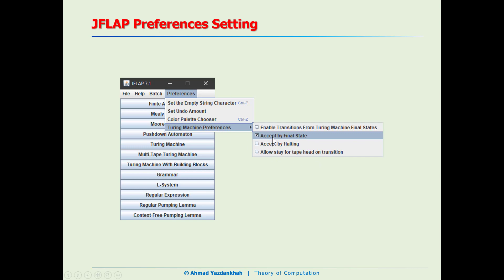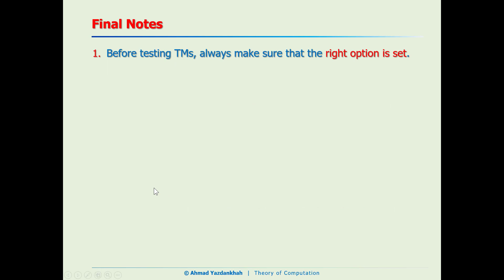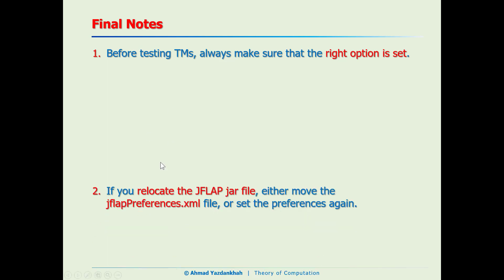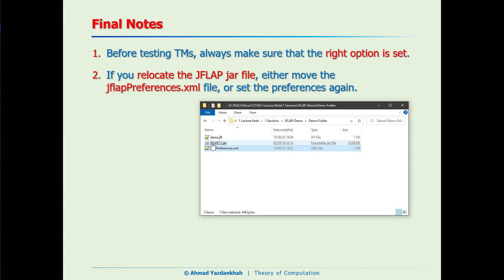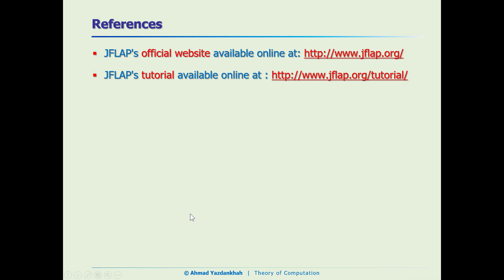To make sure we're on the same page, here is the menu option that should be checked. One final note: before testing any Turing machine, always make sure the right option is set. If you relocate the JFLAB jar file without relocating the JFLAB preferences file, JFLAB will work with default settings. Fortunately, accept by final state is the default, but it's a good habit to always check your preferences settings. Here are the references used for this tutorial — see you guys in the next video.